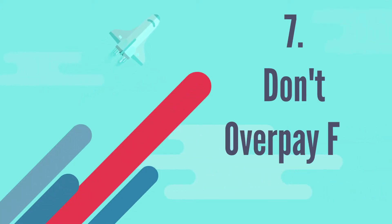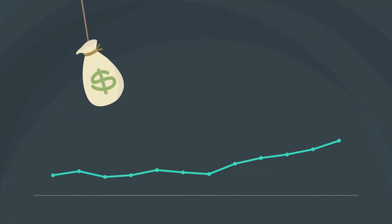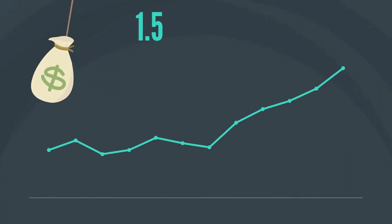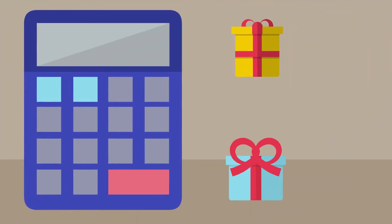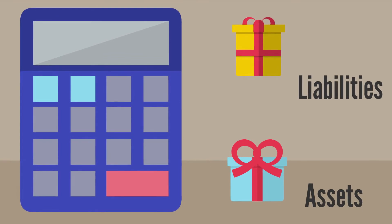7. Don't overpay for assets. The price of the stock must not be higher than 1.5 times its net asset worth. The net asset value can be calculated by subtracting the company's liabilities from its assets.